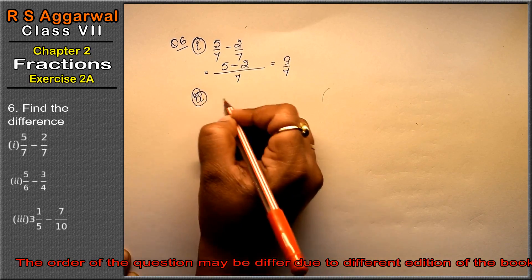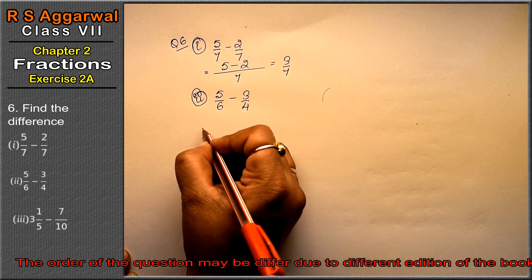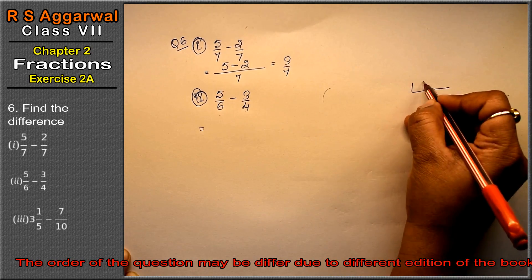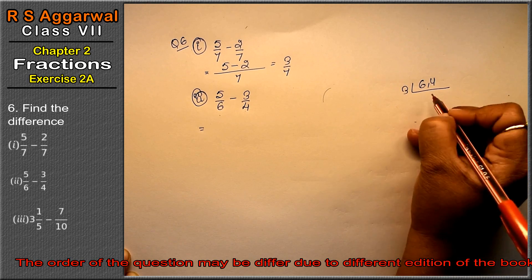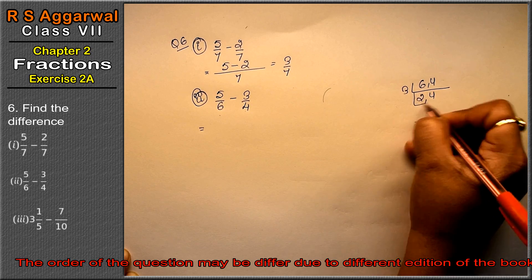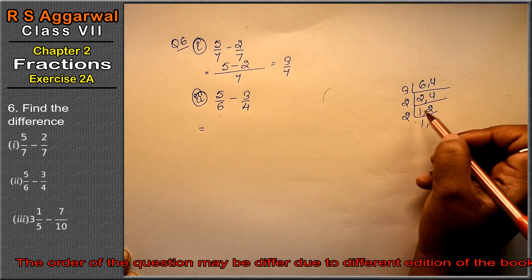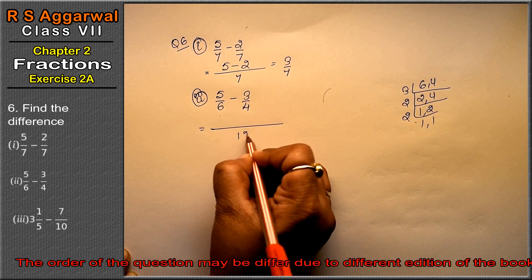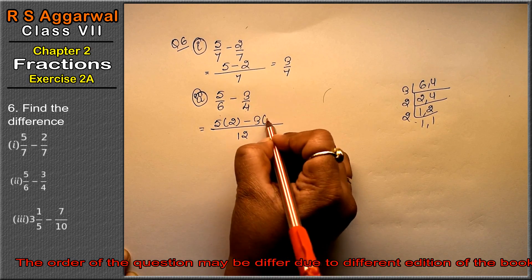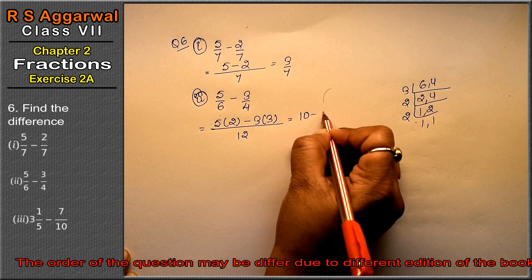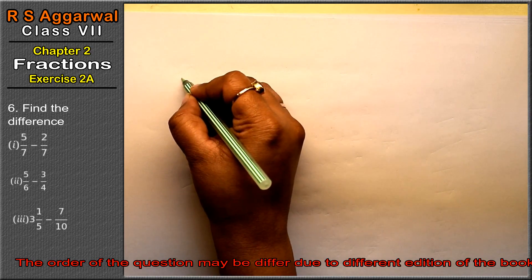Let's do the second part. Second part is 5 upon 6 minus 3 upon 4. To find the LCM of 6 and 4: 2's are 6, 2's are 4, giving LCM of 12. So we get 5 into 2 — that's 10 — minus 3 into 3 — that's 9 — upon 12. So 10 minus 9 upon 12, that means 1 upon 12 is the answer.